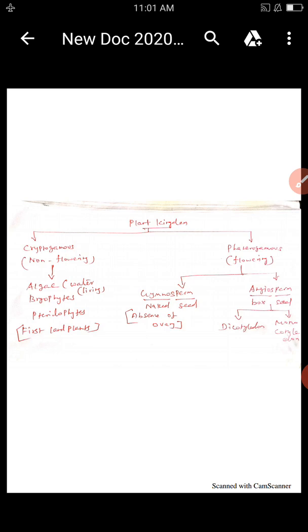Non-flowering plants — the scientific word is Cryptogamous — and then Phanerogamous for flowering plants. The origin of the first plant should be water-living. The first plant came from water, and that first terrestrial plant evolved from there.